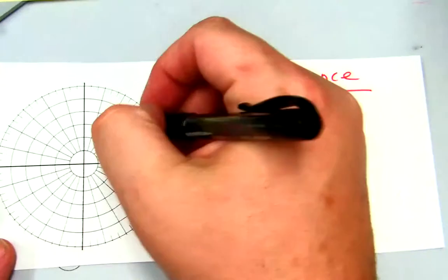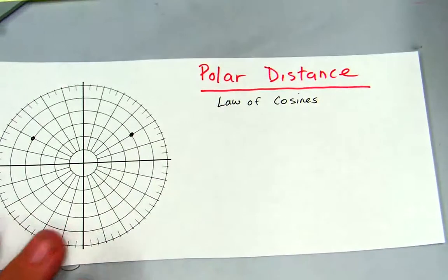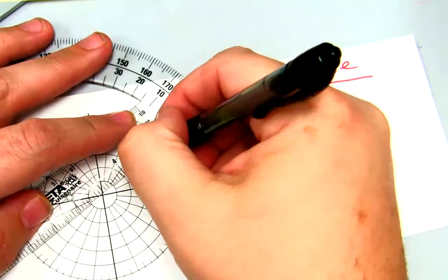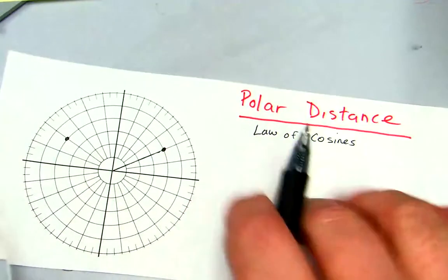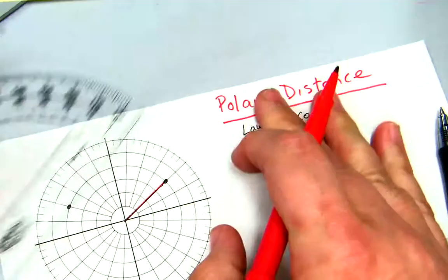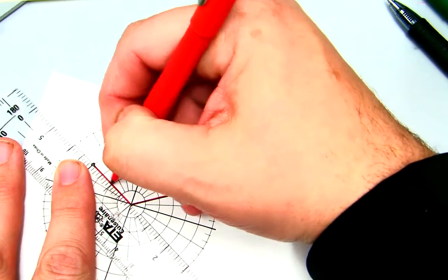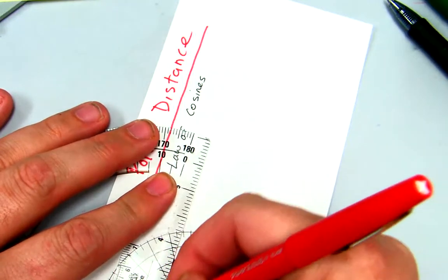I'm going to take two points — a point right here and a point right here. This is the picture you need to make, and then we're going to connect these two points right here.